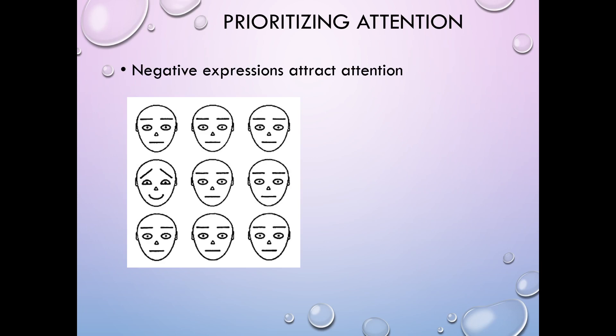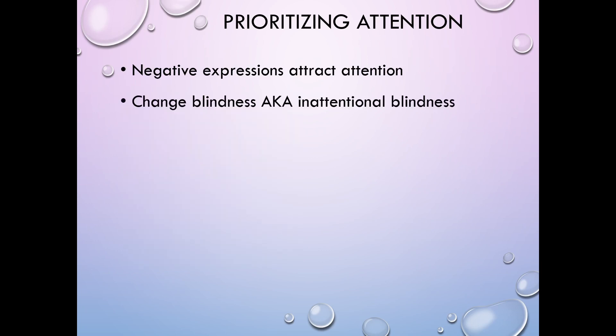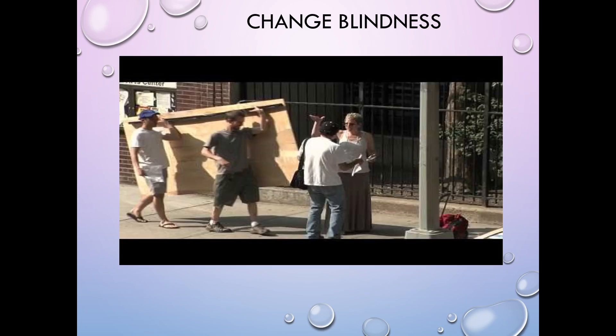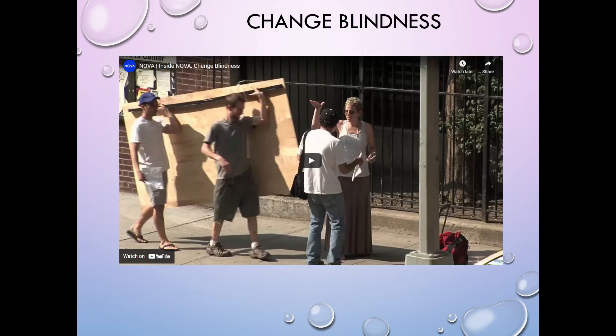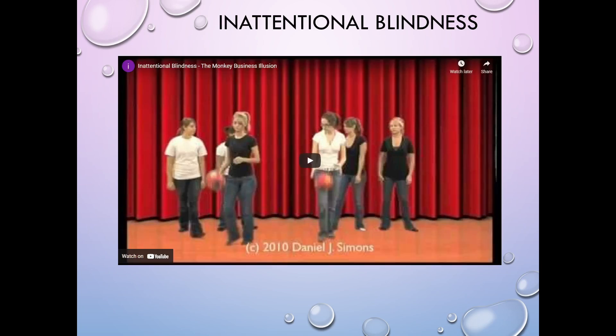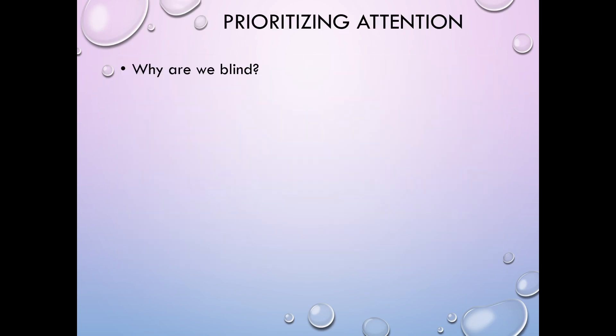Here's another example where we have a bunch of neutral faces and one person on the middle left displaying what's really just a sign of submission. Again, it's not a positive expression, and it's attracting our attention even though there's a little smile there. Now, these two concepts — change blindness and inattentional blindness — I have a couple of videos in the playlist to illustrate them. The first will run, then the second, and then we'll come back to talk about why we are blind in these situations. So I will see you on the other side.